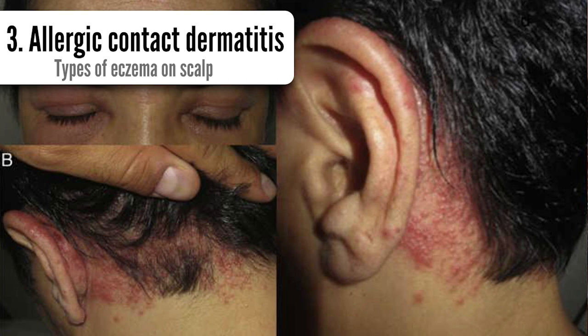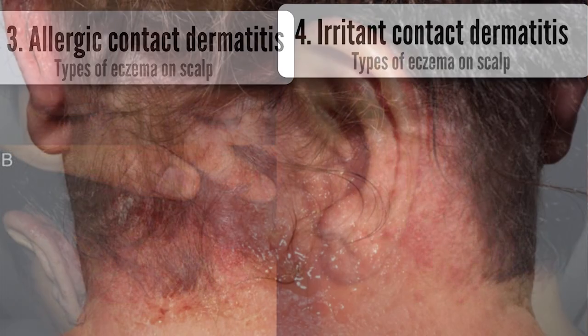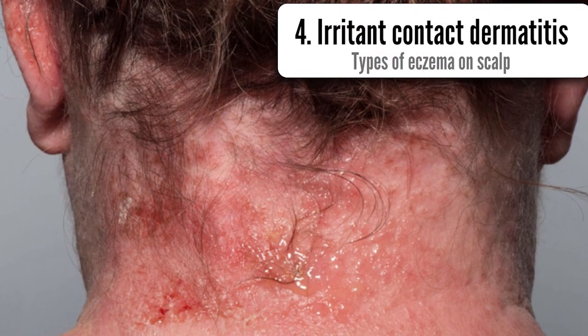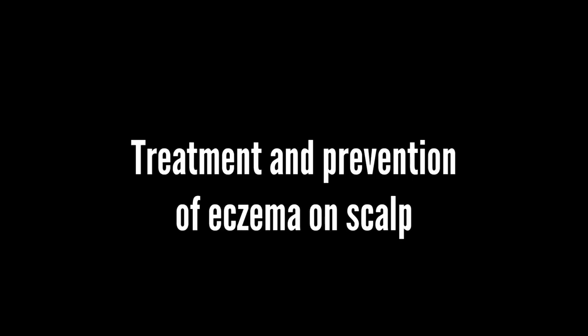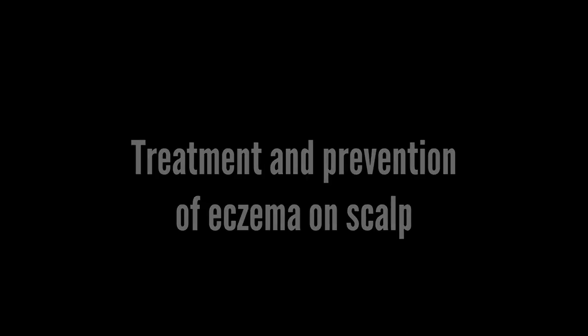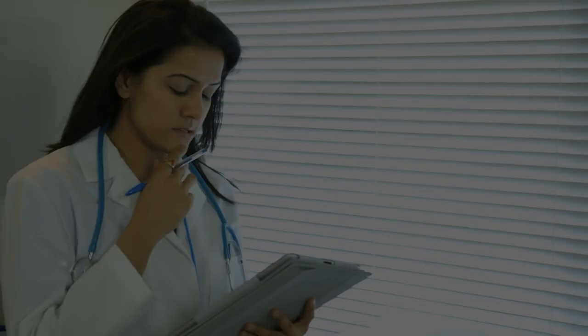Irritant contact dermatitis is a type of eczema that occurs when the skin surface is irritated by a substance that causes the skin to become dry, red, and itchy.